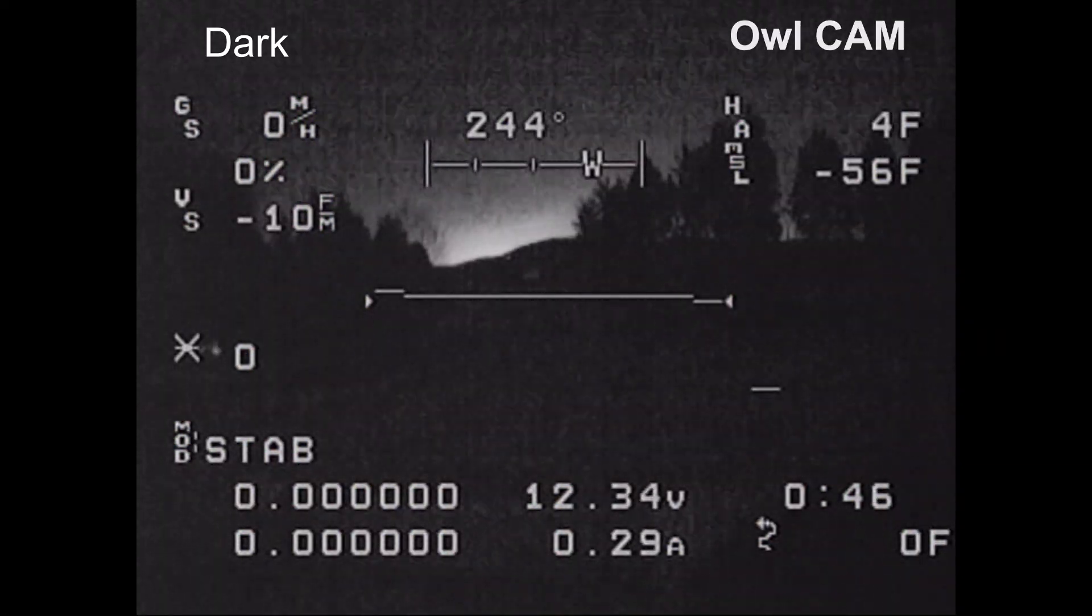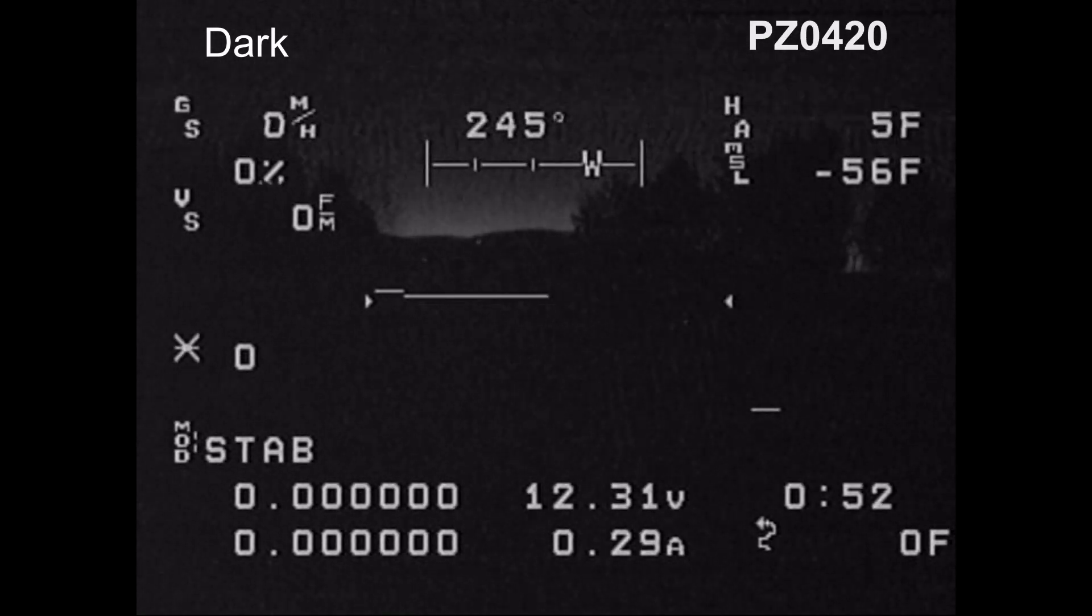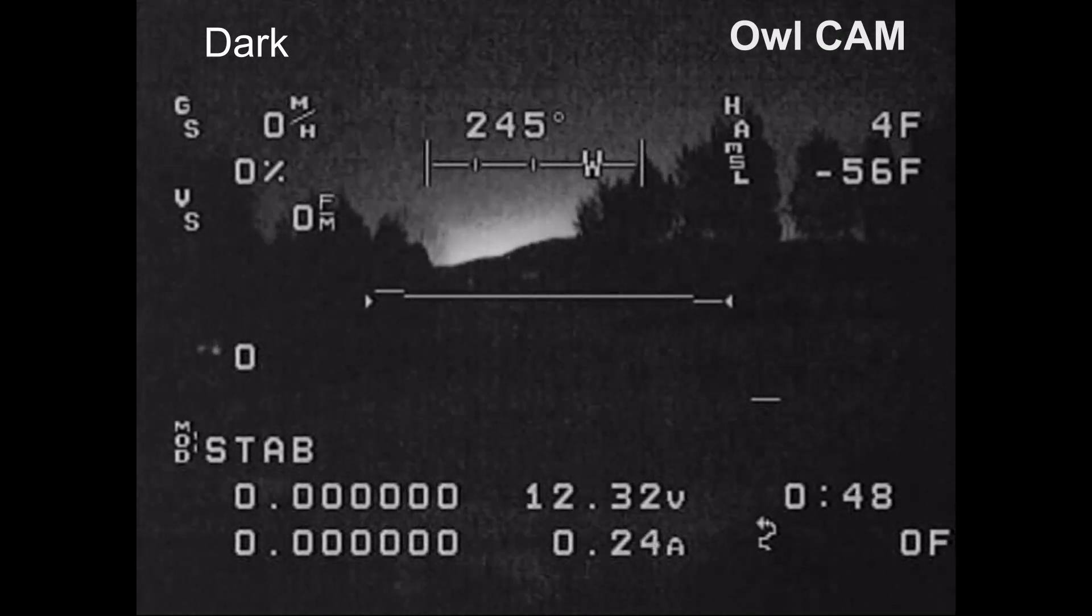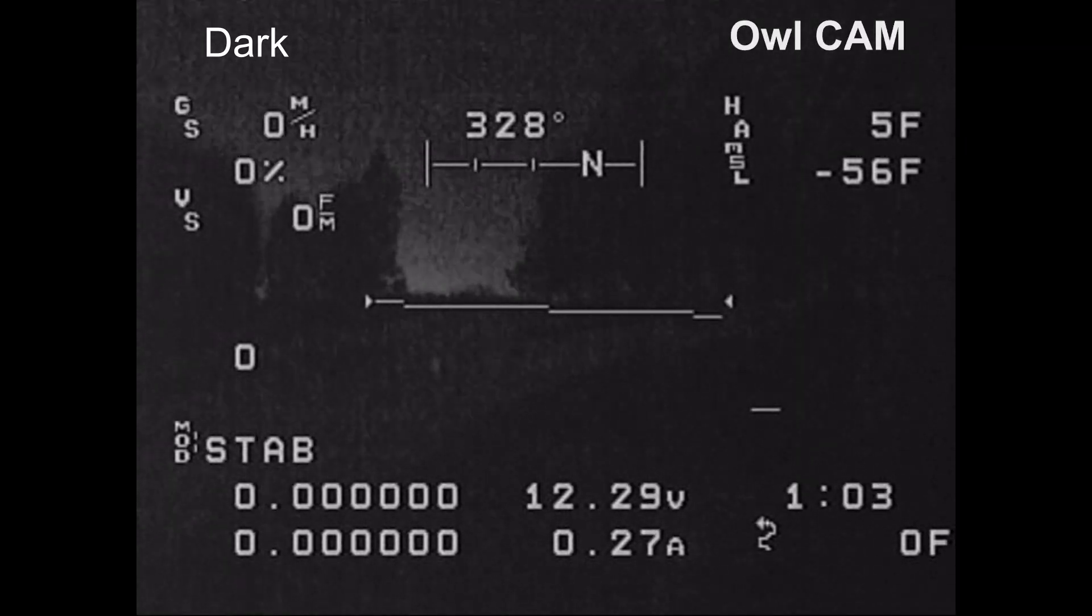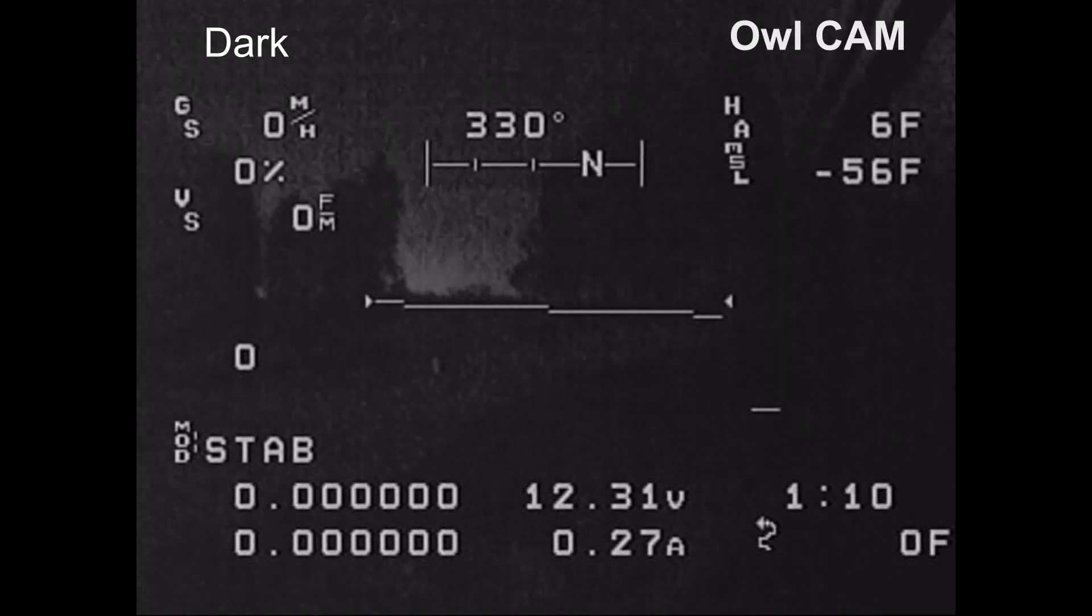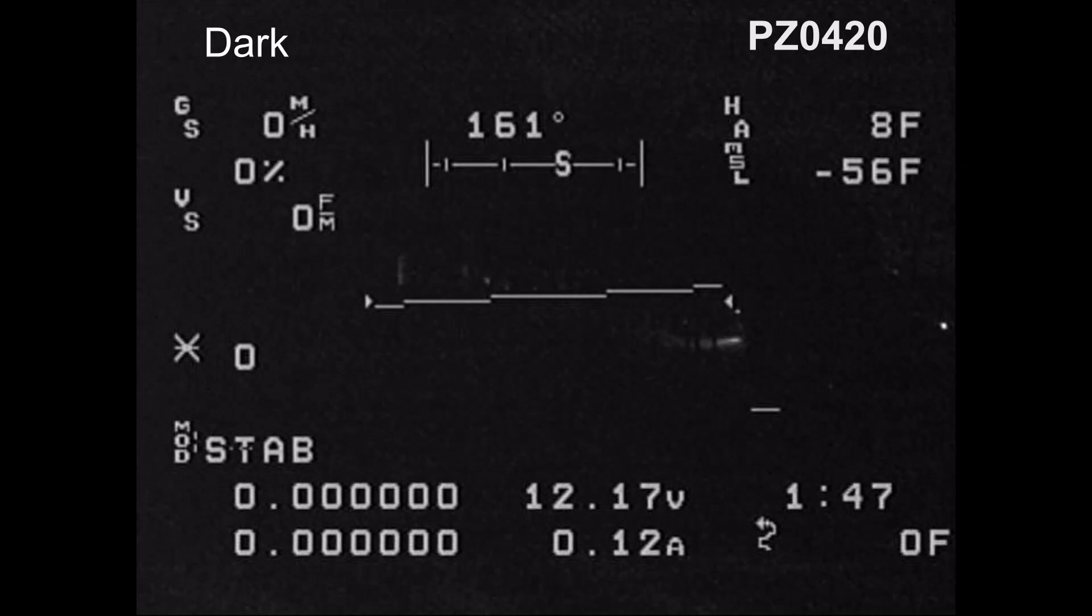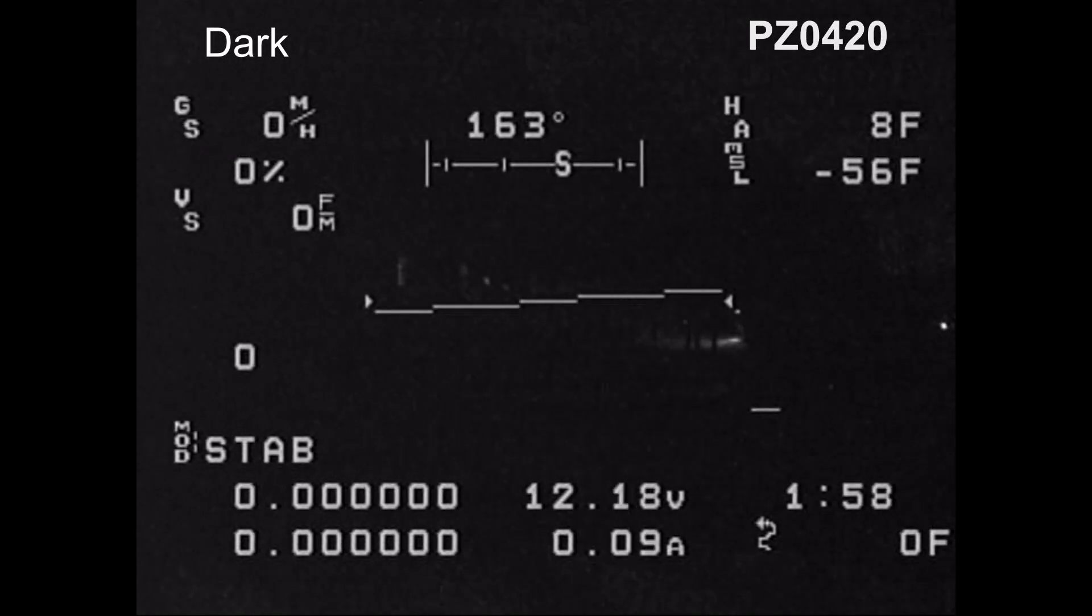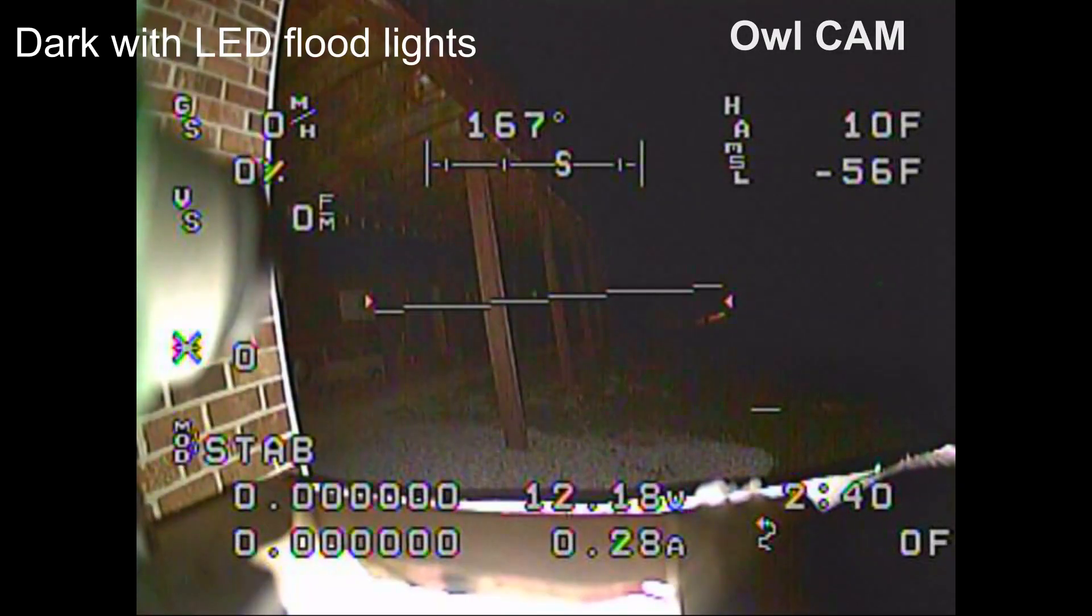Here it is dark. You can definitely see the OWL has more details in the distance. You can see the grass in the distance with the OWL camera, but with the PZ0420 you really can't see anything off in the distance. See how you can see the well head there? The white pipe in the middle. You can see it with the OWL camera but not with the PZ. This is looking back at the porch and some lights in the distance from the neighbor's house. You can definitely see a little more detail with the OWL.